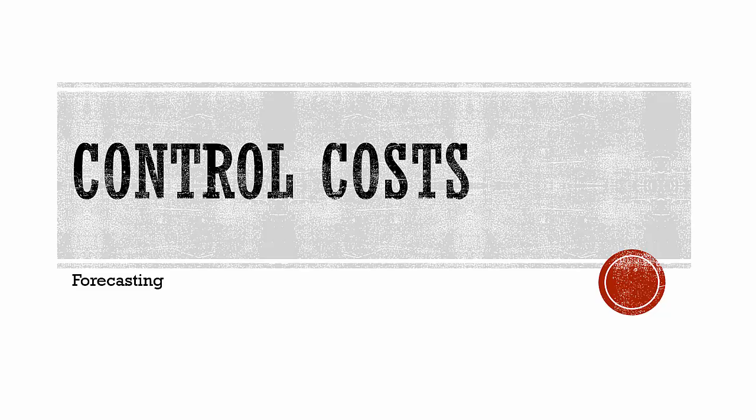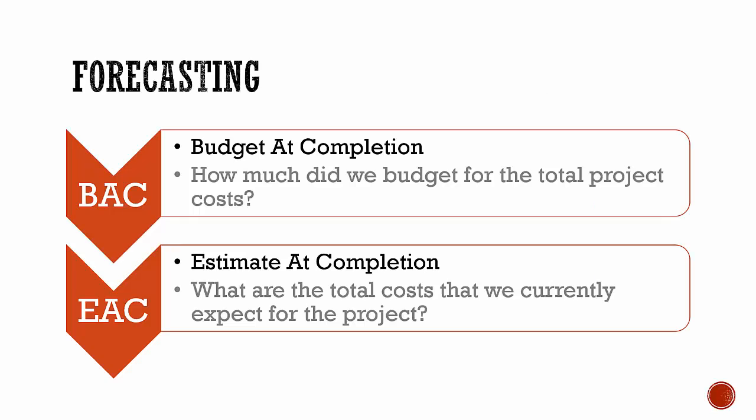Control costs – forecasting. In the process Determine Budget, the total project budget was developed and approved. This value is sometimes called BAC – Budget at Completion. As the project progresses and you observe its performance, it is possible to develop a forecast for the Estimate at Completion – EAC – that may actually differ from the BAC. Estimate at Completion answers the question: what are the total costs that we currently expect for the project?